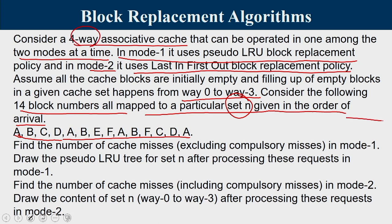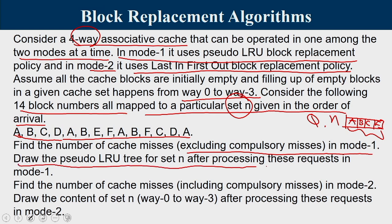14 block numbers mapped to a particular set are given in order of arrival. They must all reside in 4 ways of the set. If set N currently holds blocks A, B, C, F and a new request Q arrives, a replacement must occur. Part 1: find the number of cache misses excluding compulsory misses in Mode 1 (pseudo-LRU), and draw the pseudo-LRU tree after processing all requests.